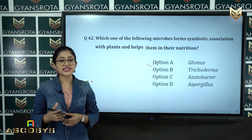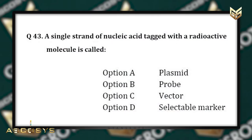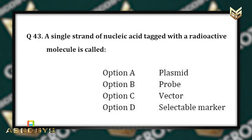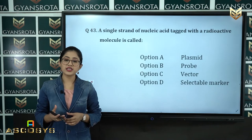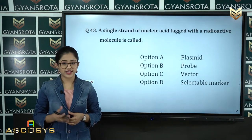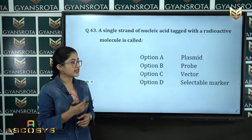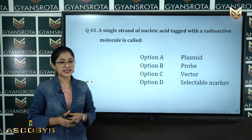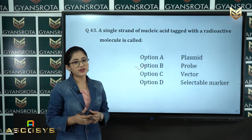Question 43: A single strand of nucleic acid tagged with a radioactive molecule is called option A: Plasmid, option B: Probe, option C: Vector, option D: Selectable marker. This is from the chapter Biotechnology: Principles and Processes. The correct answer is option B, Probe.